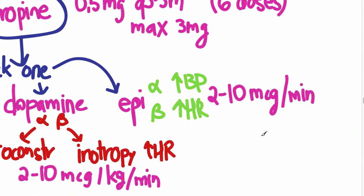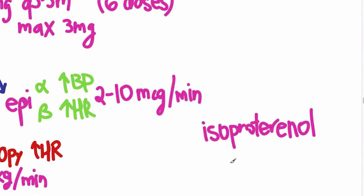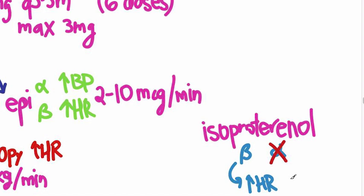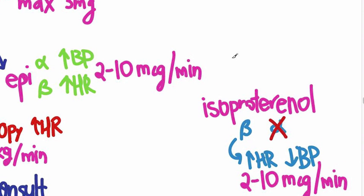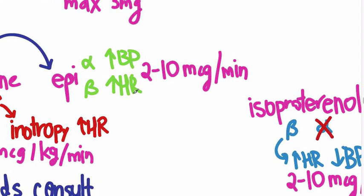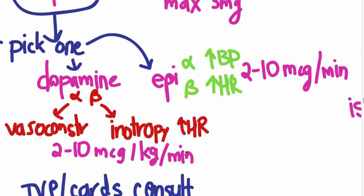For comparison, let's look at isoproterenol, a drug we used to use. It's predominantly beta with really no alpha, so you get mostly an increase in heart rate and potentially even a decrease in blood pressure without the alpha peripheral vasoconstriction. Its dose is also 2 to 10 micrograms per minute. So 2 to 10 micrograms seems to be a running thread: 2 to 10 for isoproterenol, 2 to 10 for epi, and 2 to 10 micrograms per kilogram per minute for dopamine.